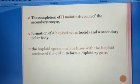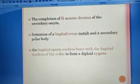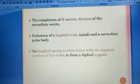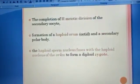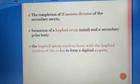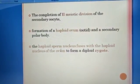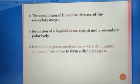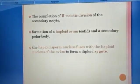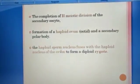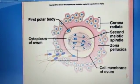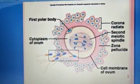Following fertilization, there is completion of the second meiotic division of the secondary oocyte, forming a haploid ovum and a secondary polar body. The haploid nucleus of the sperm then fuses with the haploid nucleus of the ovum to form the zygote.